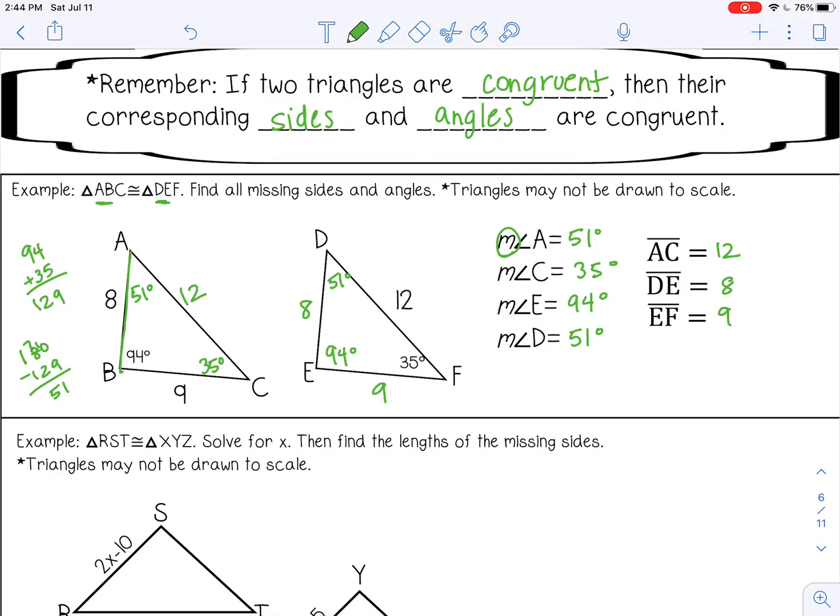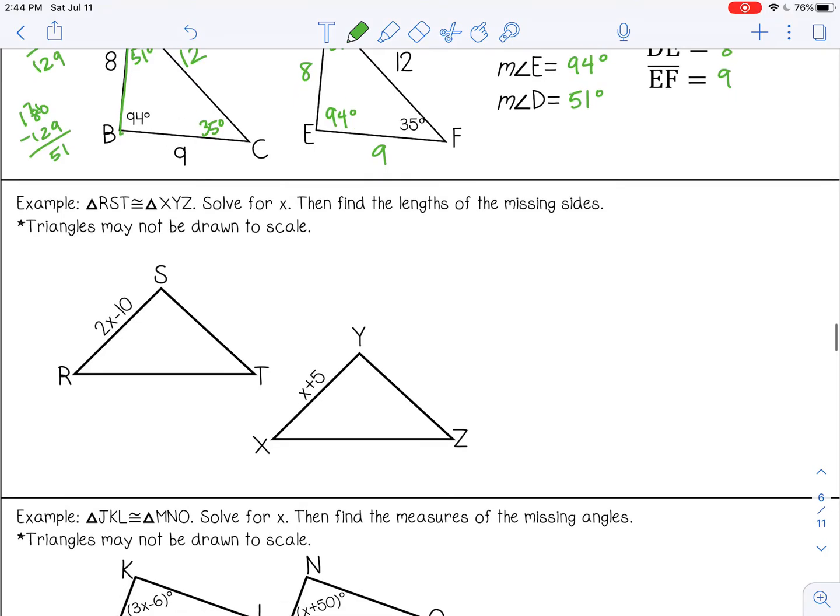Let's do the next example. Triangle RST is congruent to triangle XYZ. Solve for x, then find the lengths of the missing sides. Again, triangles may not be drawn to scale, so we assume they are congruent based on this statement.